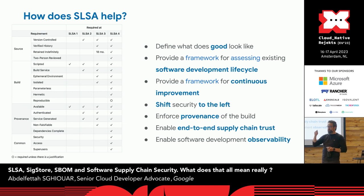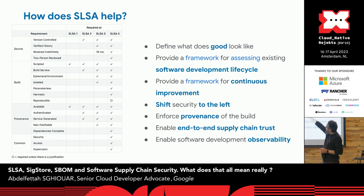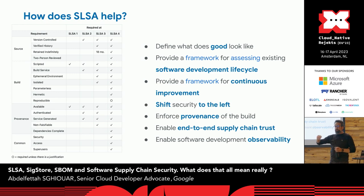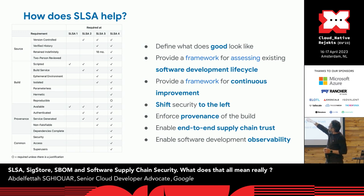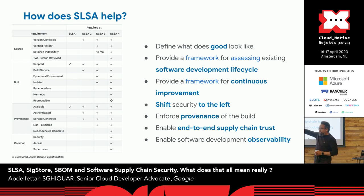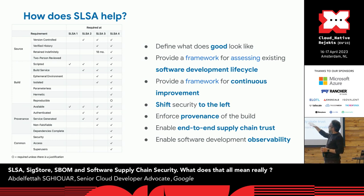For each SLSA level there are specific checks. Level 1: is your build system scripted? Is your provenance available? Level 2: is your code version controlled, your build dependent on a build service (not local), and your provenance both available and authenticated (signed)? Is provenance service-generated rather than written manually? The higher you go, the more secure your software supply chain. Reproducible builds are optional at higher levels because you may not have access to all dependencies needed to reproduce the artifact.